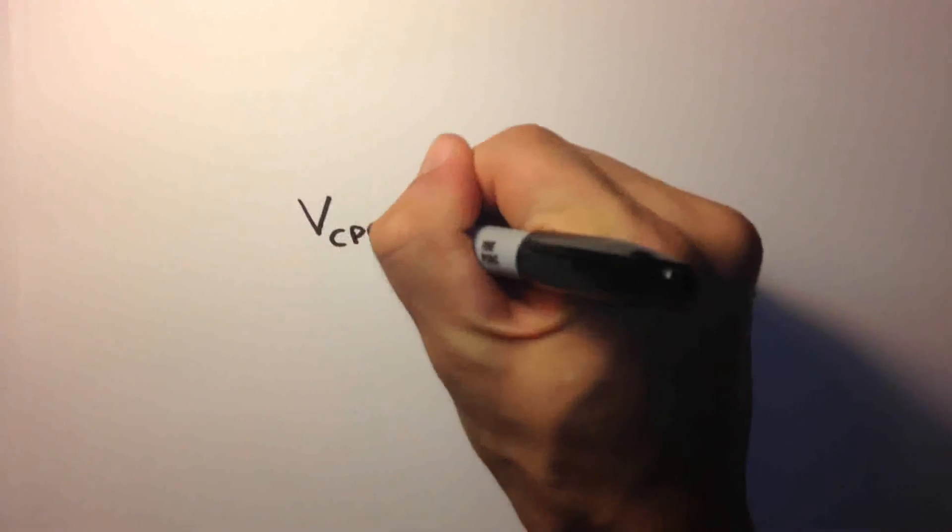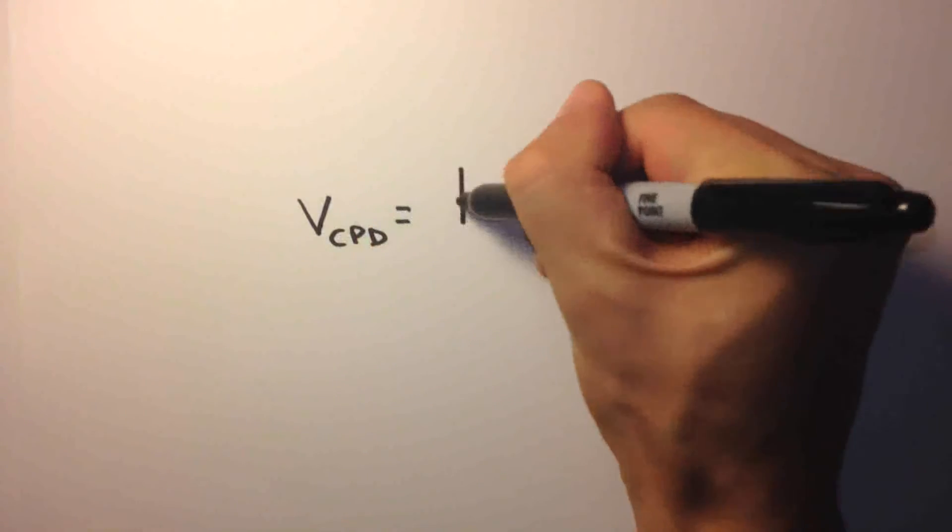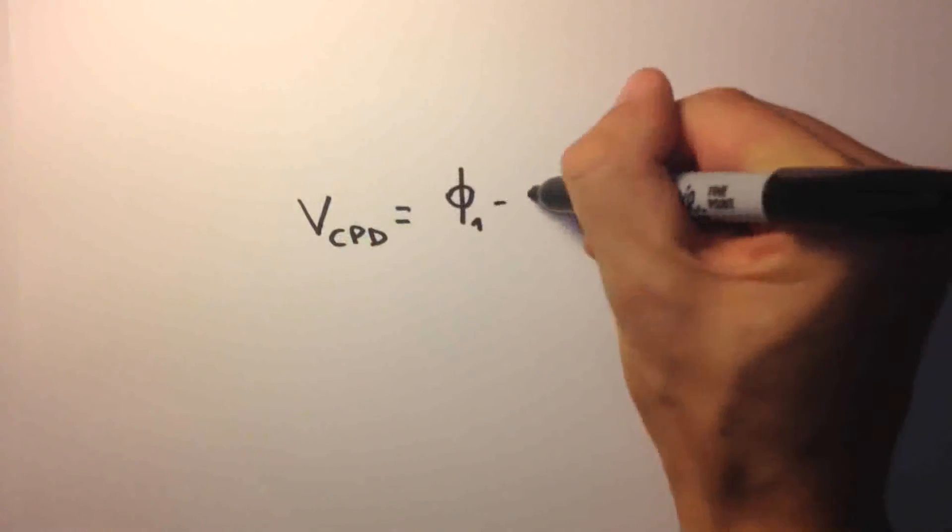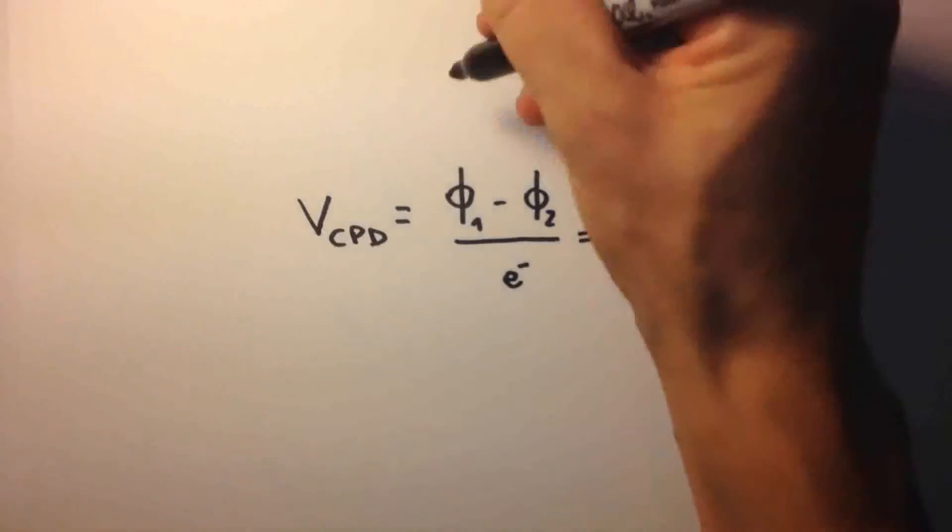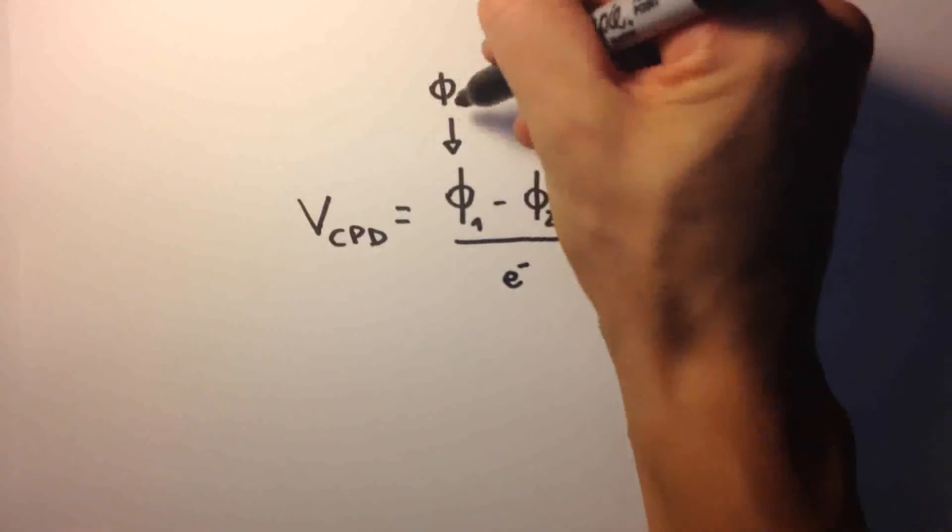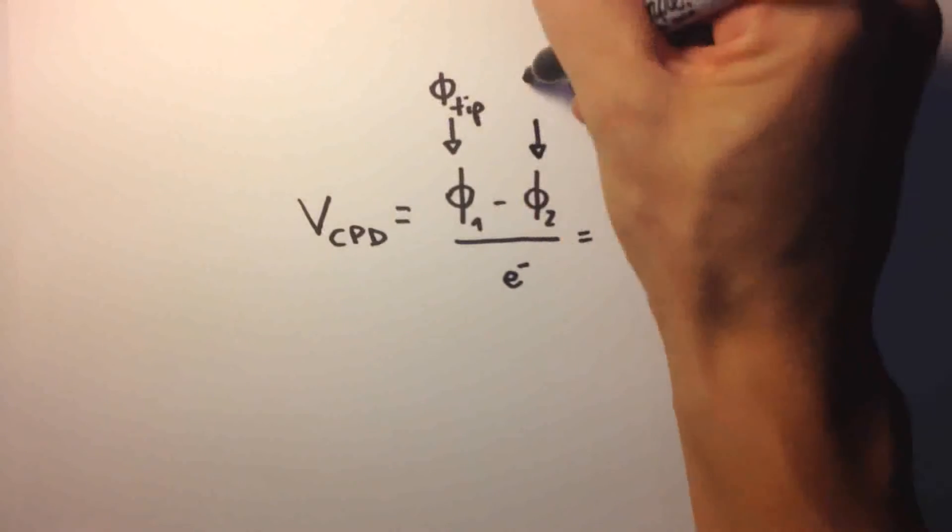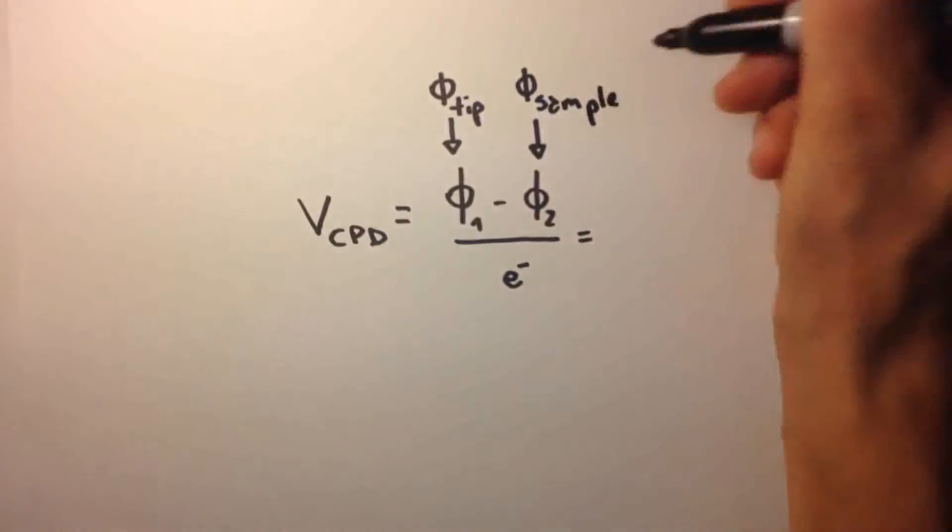The contact potential difference and the work function are linked by this equation. In Kelvin probe microscopy, the two work functions are respectively related to the tip and to the sample surface. The microscope measures the work function difference for each point of the surface.